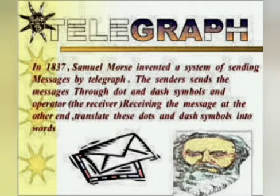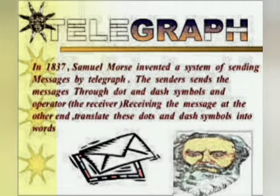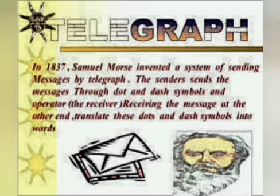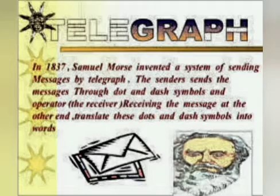Let's see what is telegraph. In 1837, Samuel Morse invented a system of sending messages by telegraph. The sender sends messages through dots and dash symbols, and the operator — the receiver — at the other end translates these dots and dash symbols into words. Just like WhatsApp today makes it easy to send messages within no time, the telegraph was a major step forward in its era.